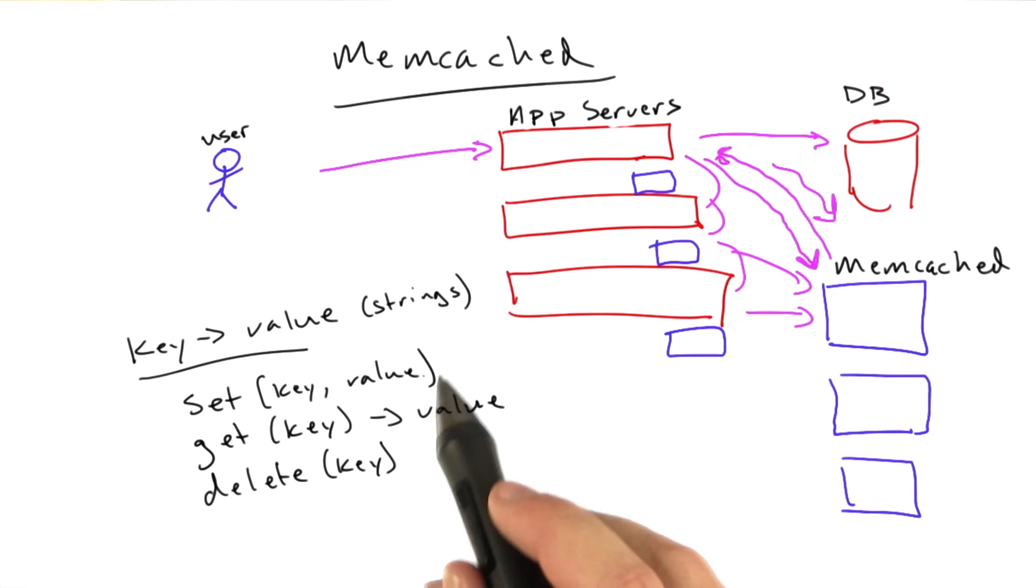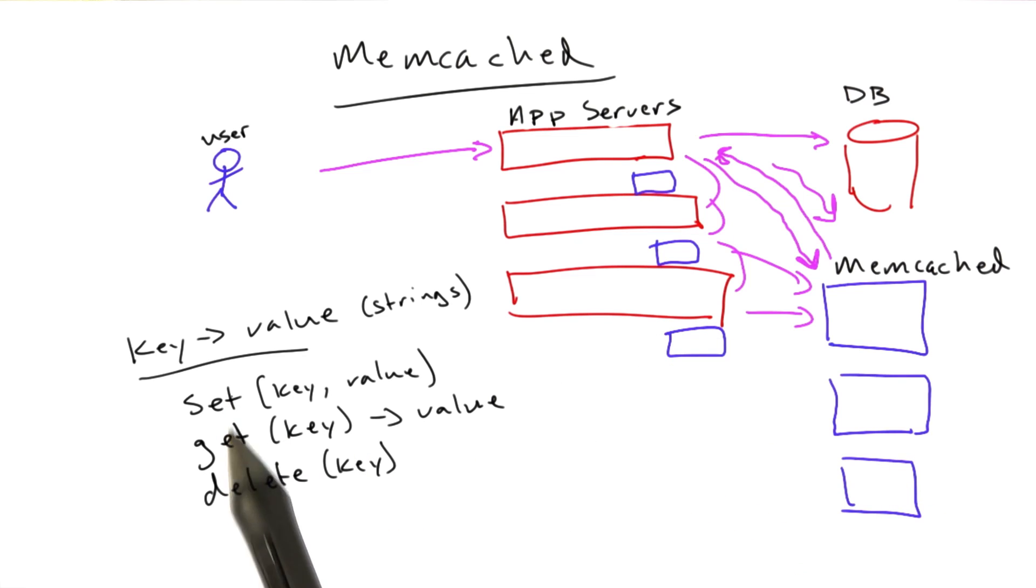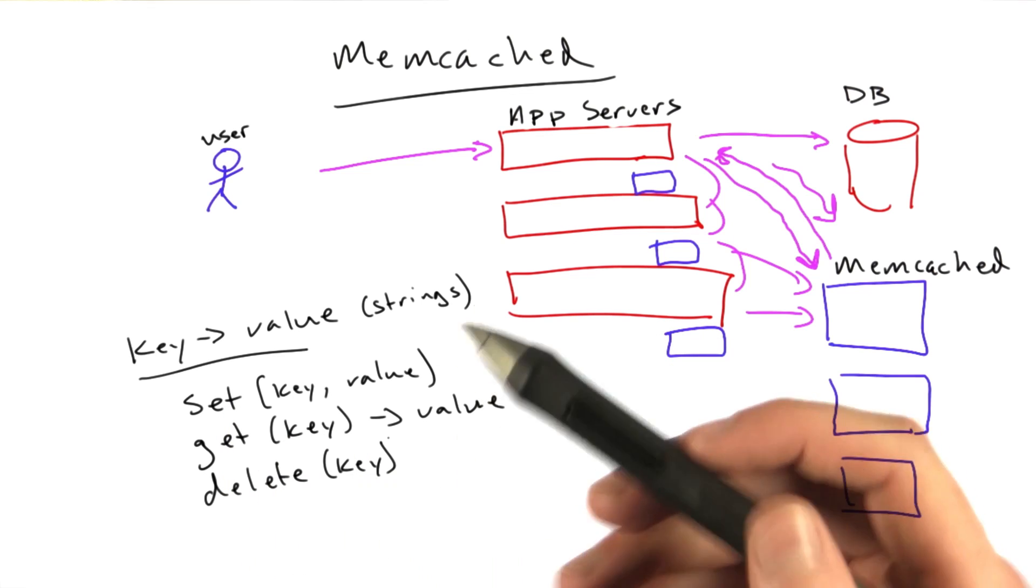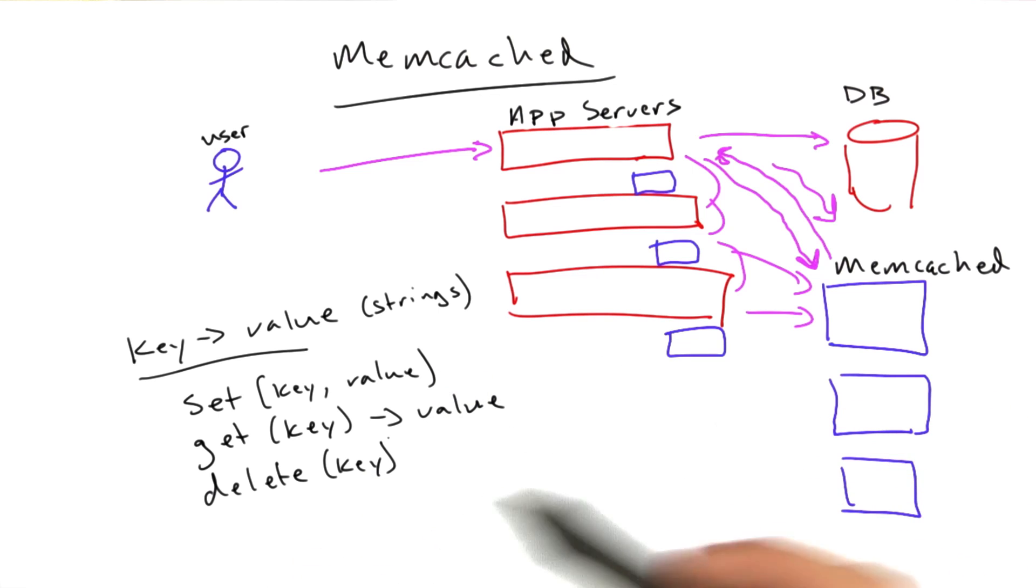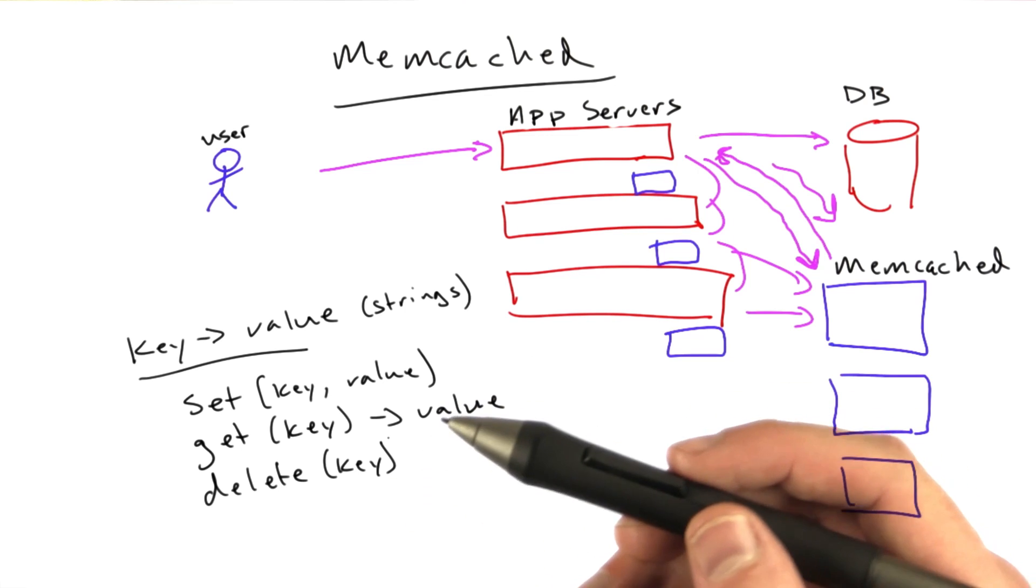There are other operations and there are actually a few other parameters here, but these are the basic ones. And you can see with these three main operations, set, get, and delete, we could actually implement all of the caching we've been doing in ASCII Chan in a system that will scale a lot better than having just a dictionary in our process.